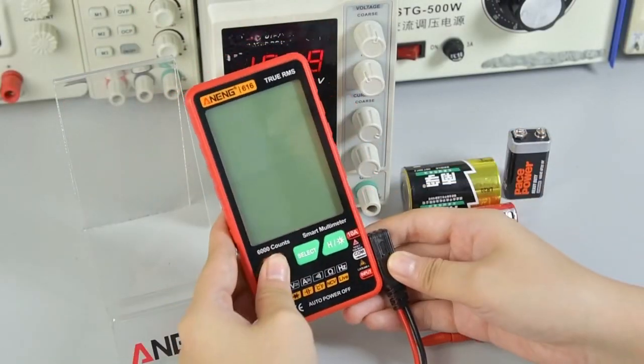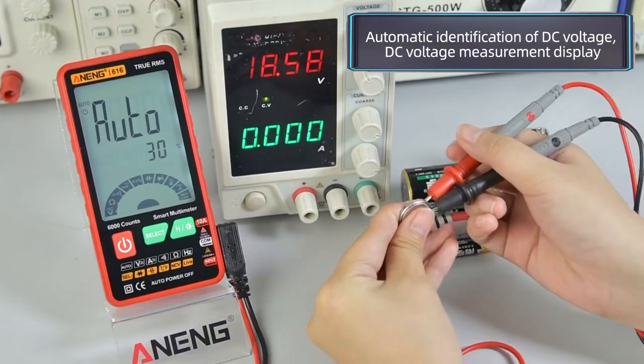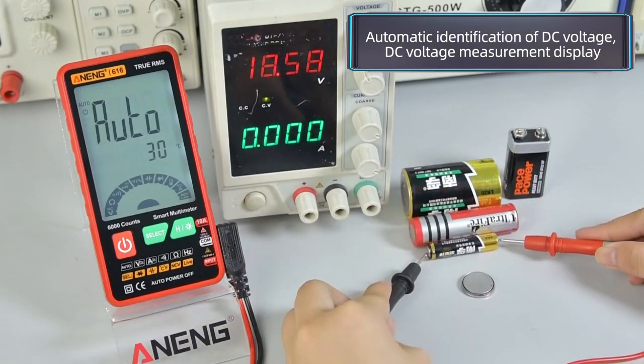Power on and turn on the backlight. Automatic identification of DC voltage. DC voltage measurement display.